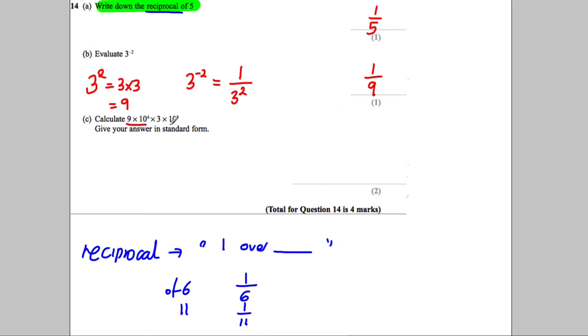9 multiplied by 10 to the power of 4 multiplied by 3 multiplied by 10 to the power of 3. So we've got 9 times 10 to the power of 4 times 3 times 10 to the power of 3.